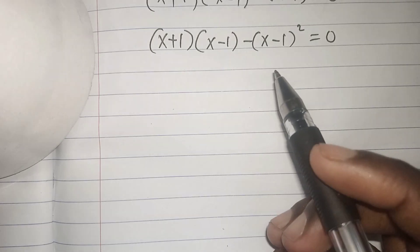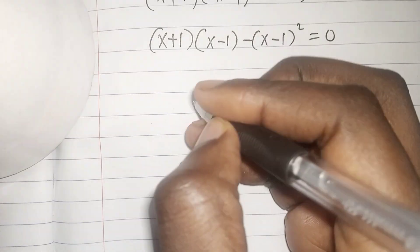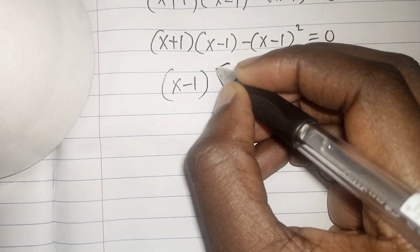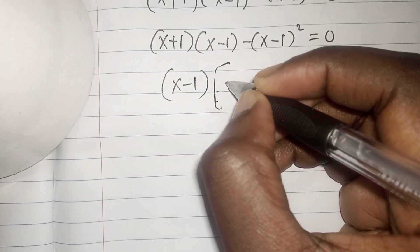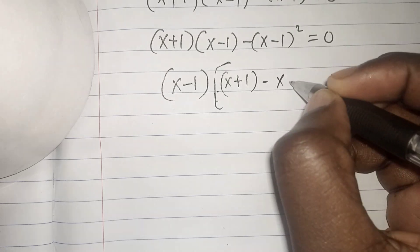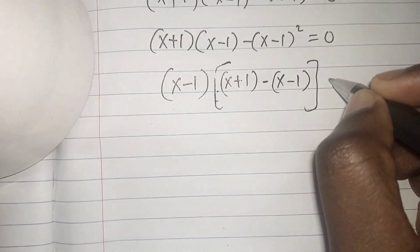Factoring out (x - 1): (x - 1)[(x + 1) - (x - 1)] = 0.